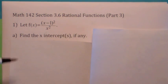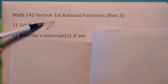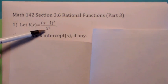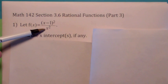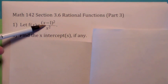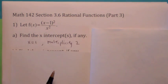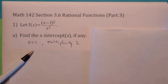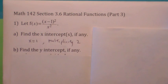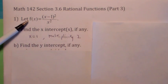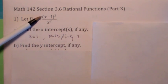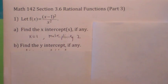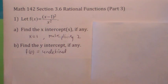The x-intercepts, remember, are where the numerator is zero, as long as the bottom isn't zero there also. So you're going to have an x-intercept at 1, multiplicity 2, which means it's going to be a turning point. The y-intercept is just f of 0. But f of 0 is undefined, so there is no y-intercept.